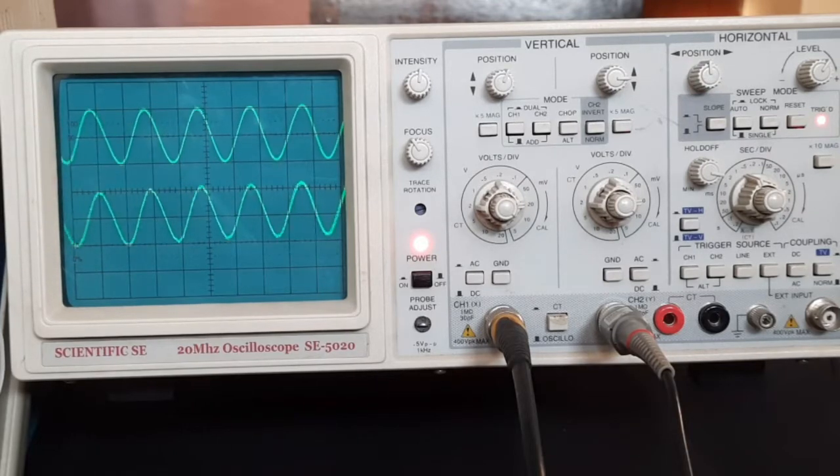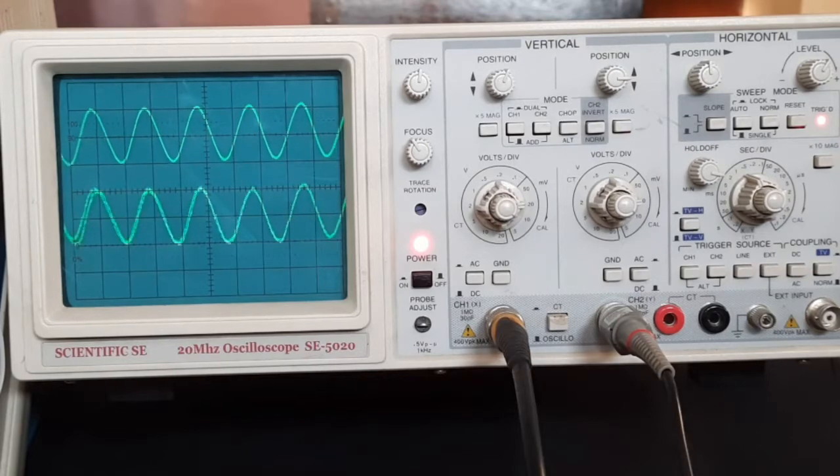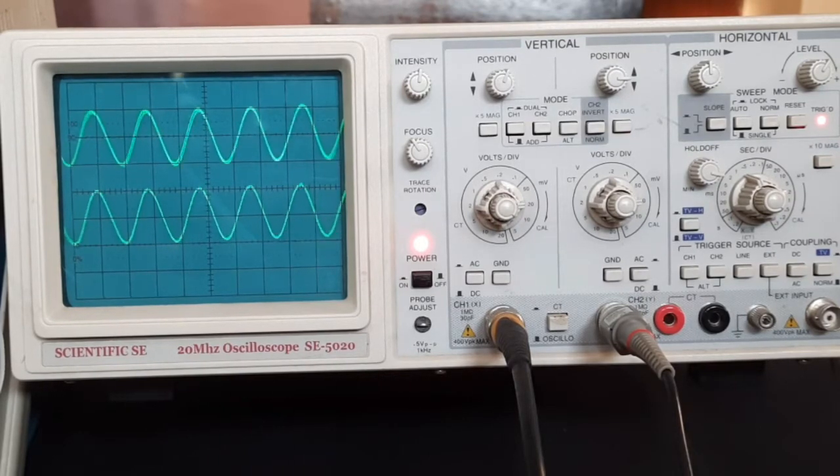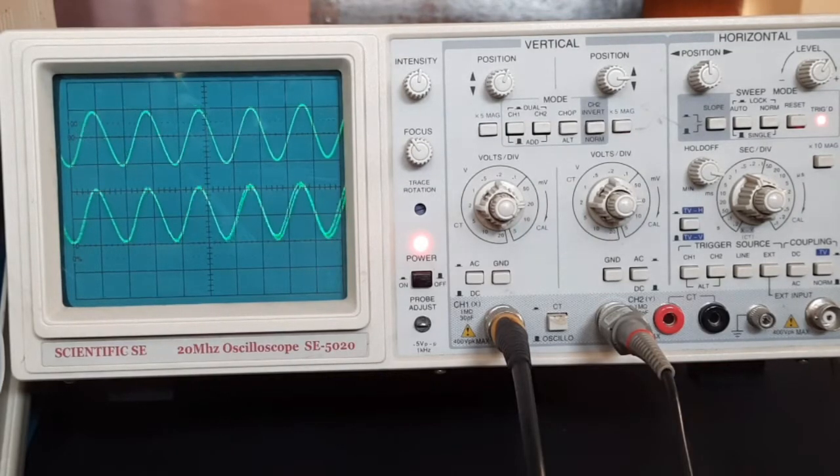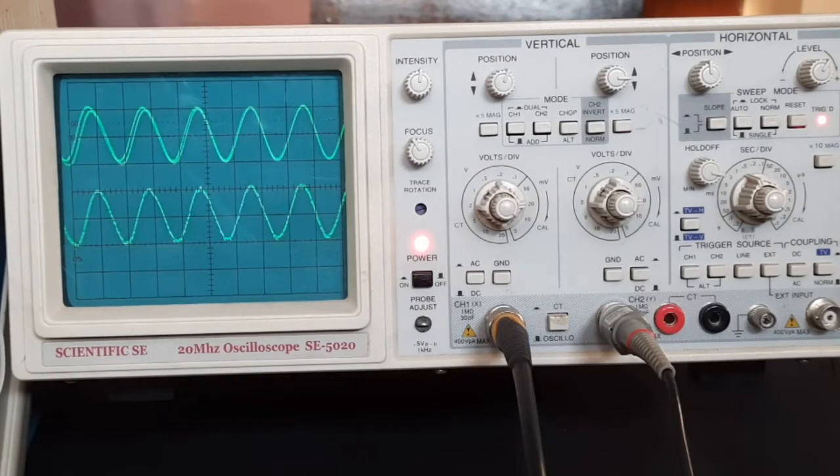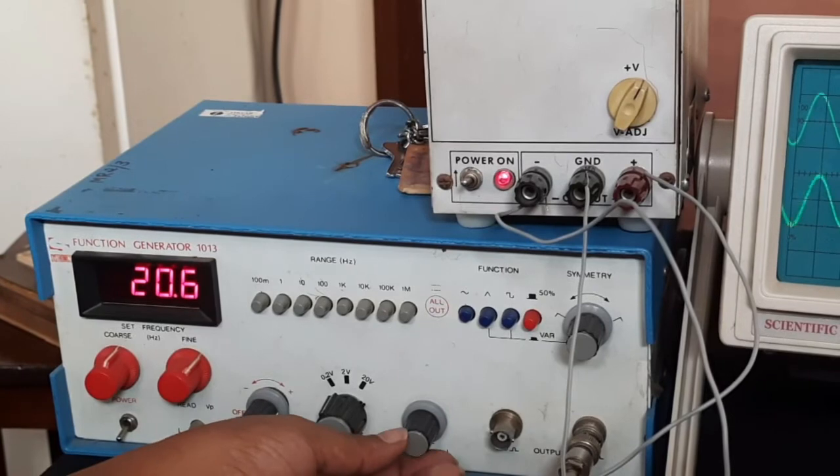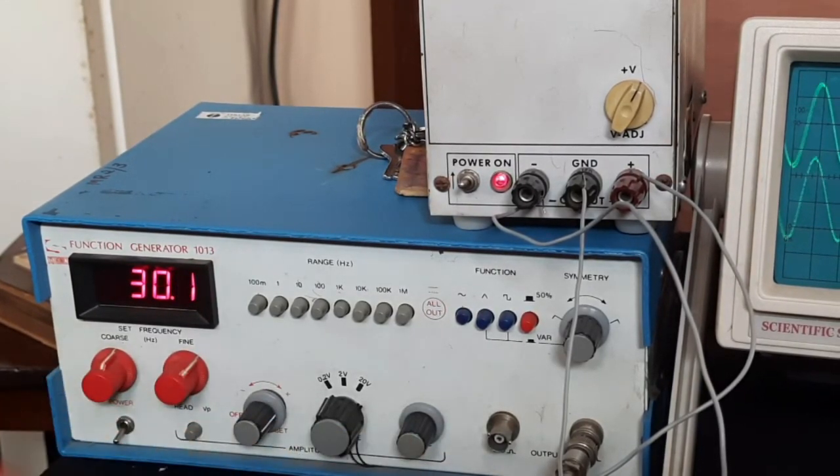So input and output is 40 millivolt. You have observed that the output is in phase with the input and the magnitude is same as that of the input, or it is acting as a voltage follower. Now you can repeat the experiment by changing the input voltage to some other value.